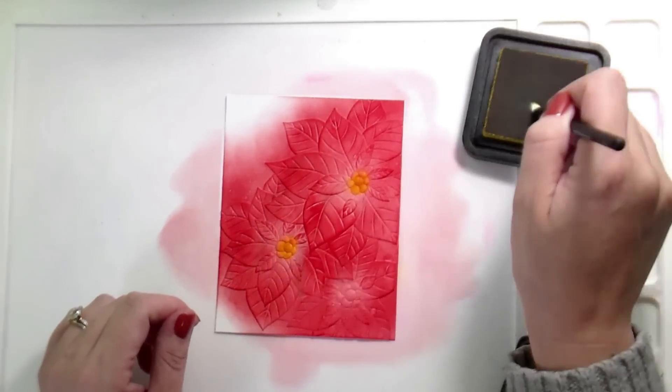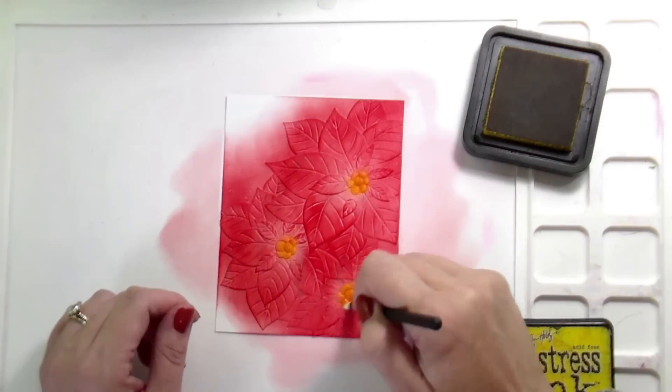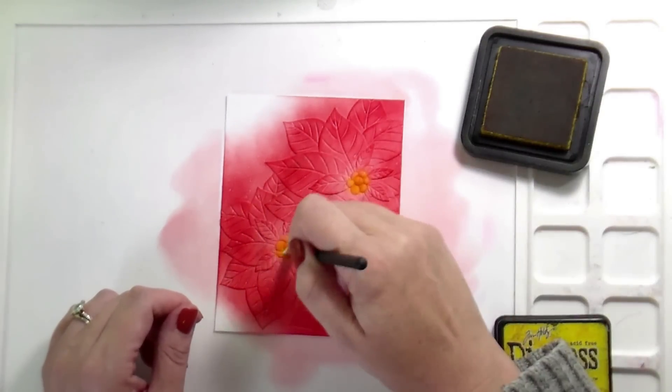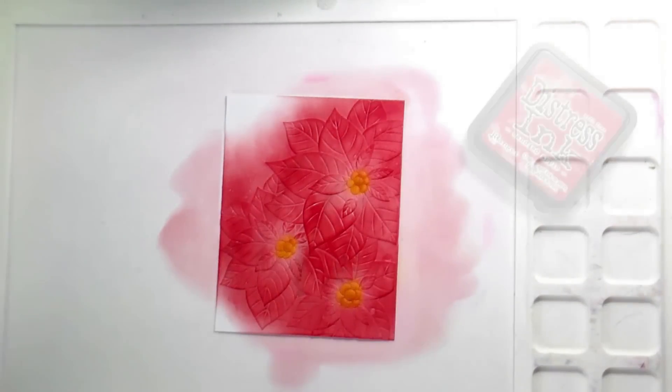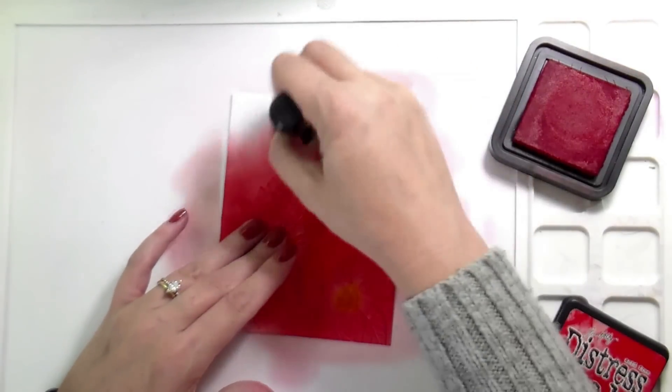So I put down Abandoned Coral, and then I went back in with a little bit of Candied Apple. Here, these are Altenew's detailed shading brushes, and I am using that to add mustard seed to the center of my poinsettias. Worked really well. The brushes are really soft. They pick up a good amount of ink. This is the first time I've used them, and I was pretty happy with them.